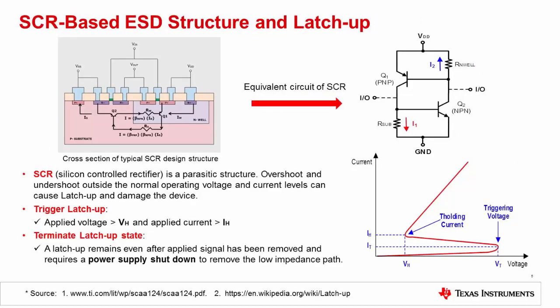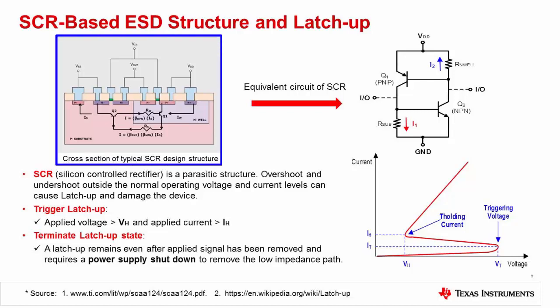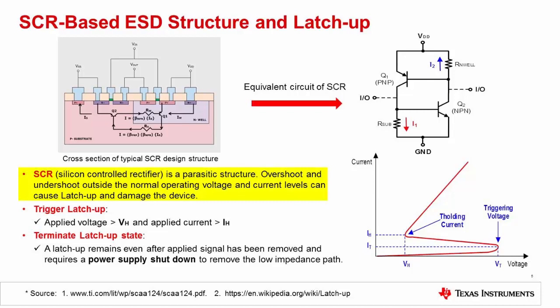This slide gives a little more detail on the SCR-based ESD protection structure. The details of the semiconductor operation aren't critical for effective overstress protection and are beyond the scope of this presentation. It is called an SCR as it acts like a silicon controlled rectifier — once it is triggered, it goes into a low-impedance state and will remain triggered until the power supplies are cycled. This structure can be triggered by overshoot or undershoot EOS signals applied to the input. Once triggered, it goes into a latch-up state and will remain in this state until the power supply is shut down.